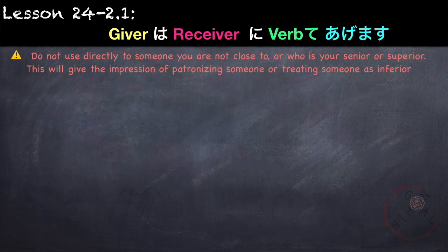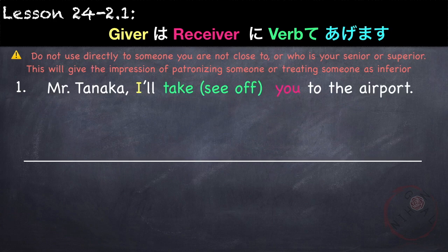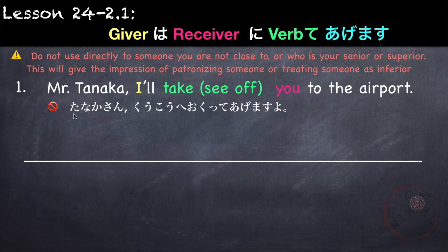However, you cannot use verb-te agemasu directly to someone you are not close to or who is your senior or superior, because this gives the impression you are patronizing them. For example, if Mr. Tanaka is your superior, you cannot say: Tanaka-san, koukou e, okutte agemasu — as this sounds like you are treating him as inferior.